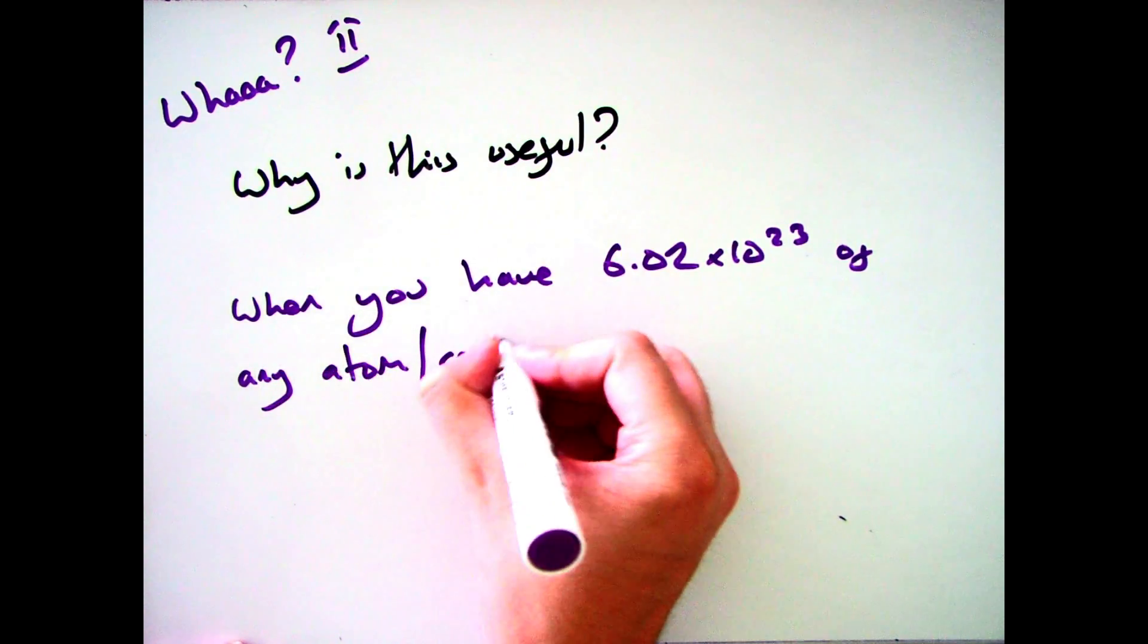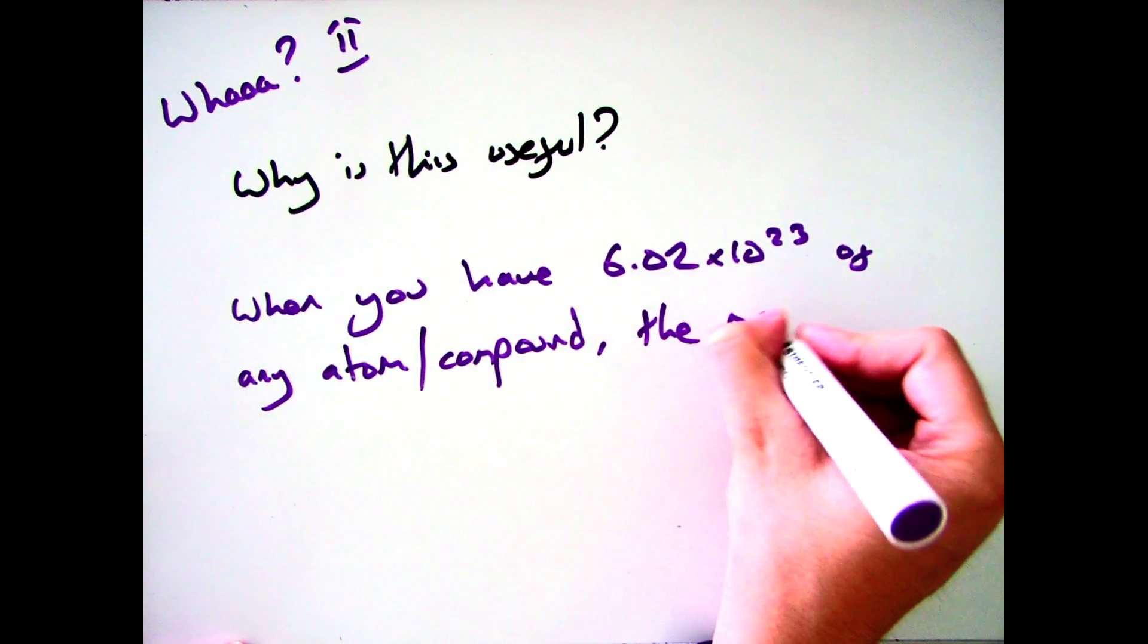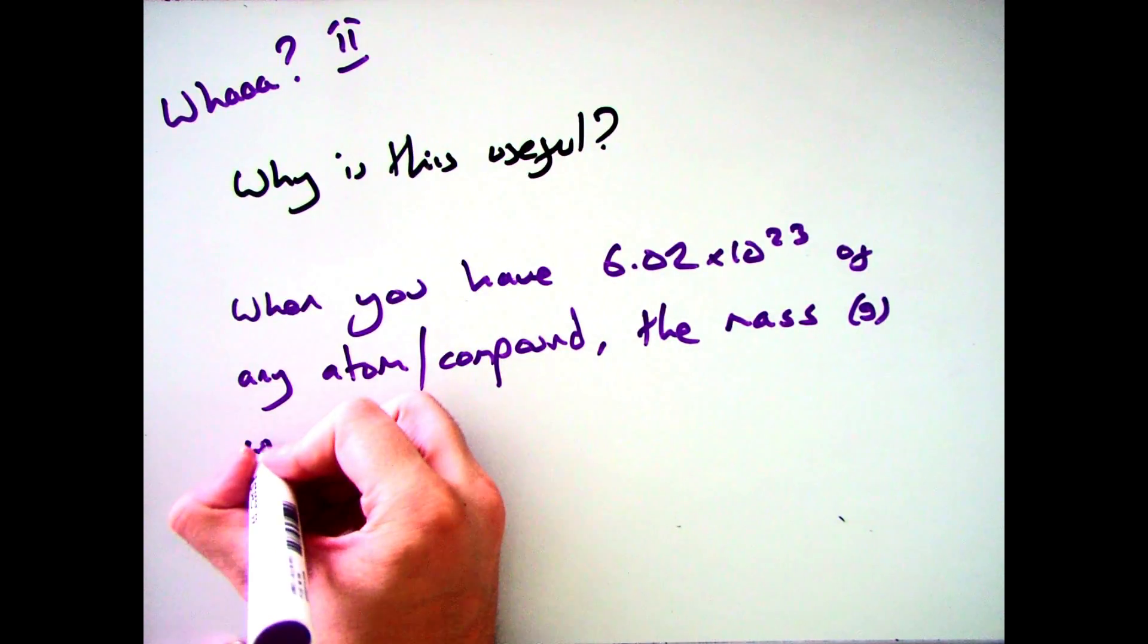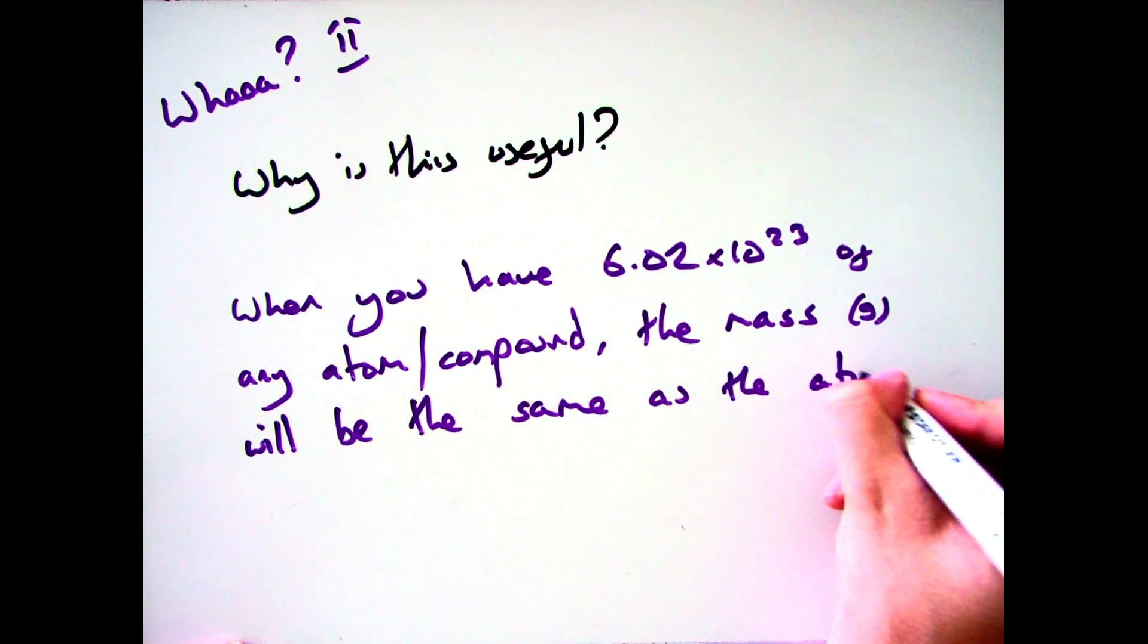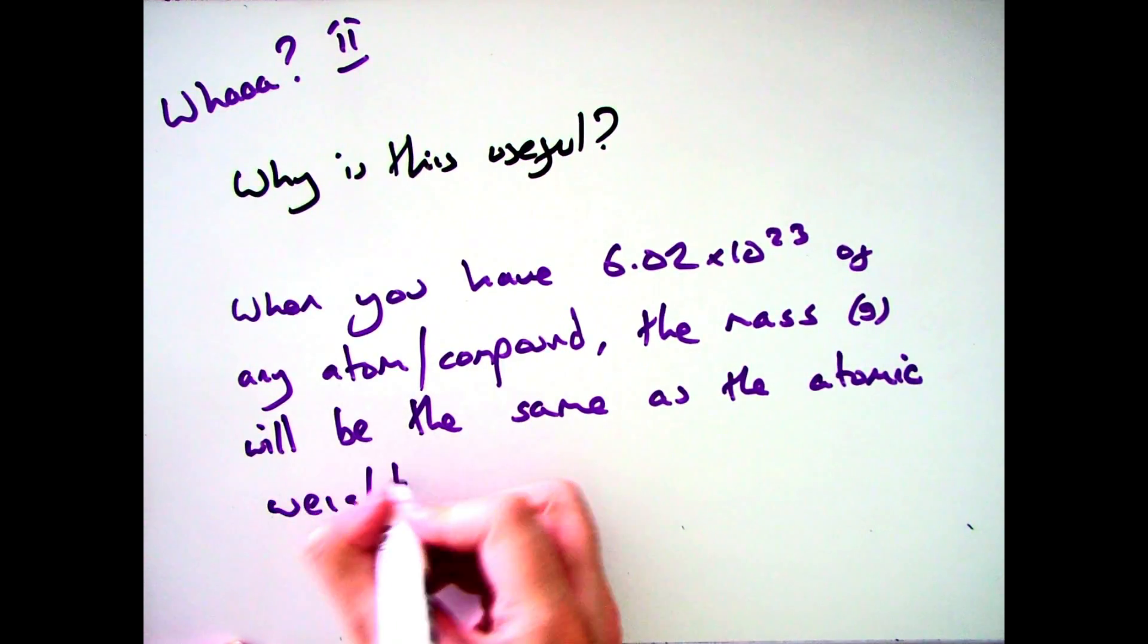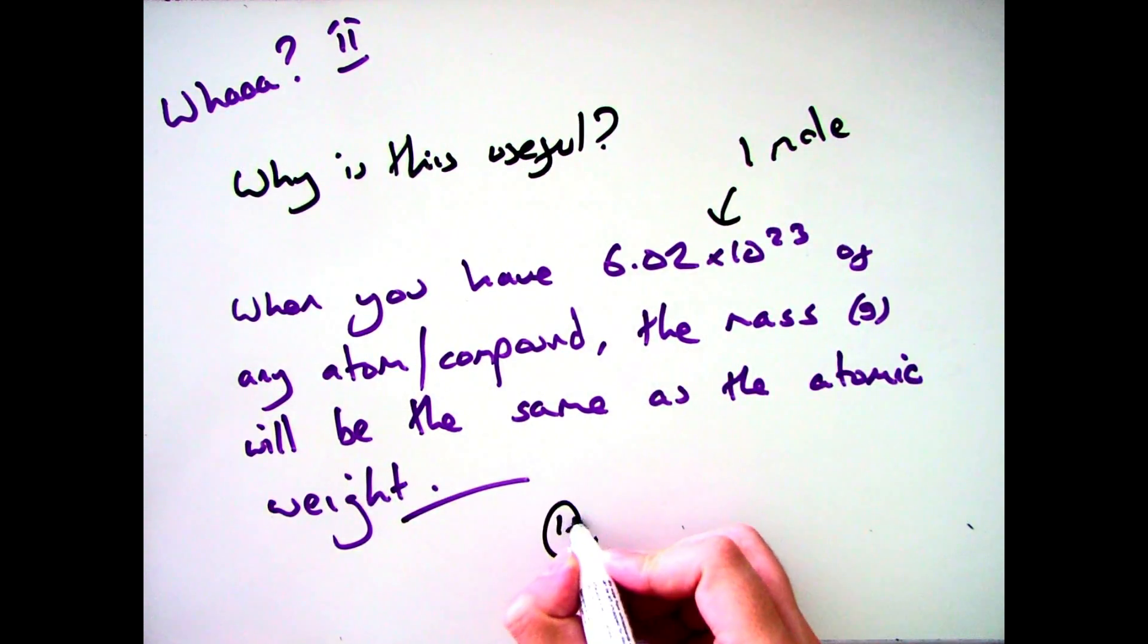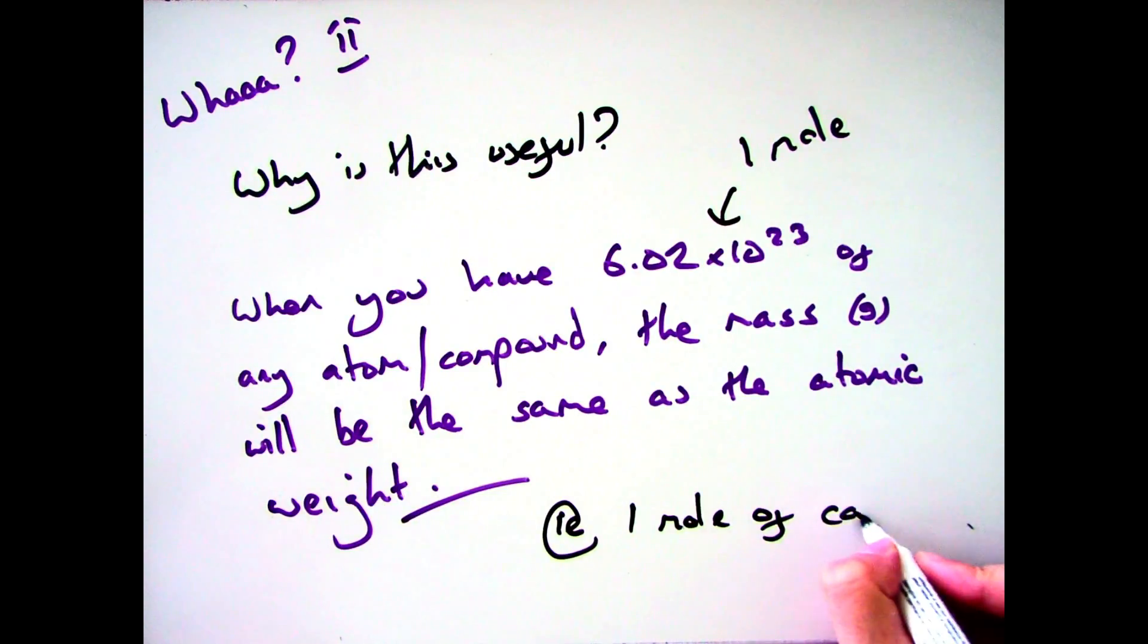So when you have 6.02 times 10 to the 23 particles of any atom or compound, what you will get is the mass of the compound will be the same as its atomic weight. So for example, if you were to have one mole of carbon, carbon has got an atomic mass of 12, therefore you will have 12 grams of carbon present.